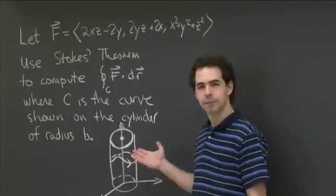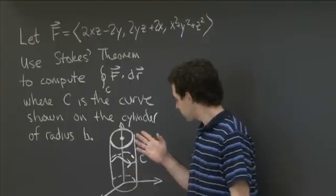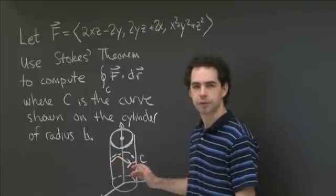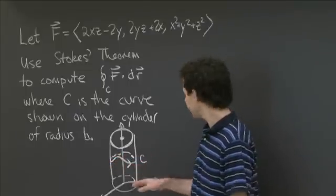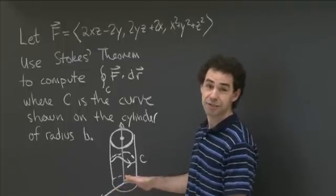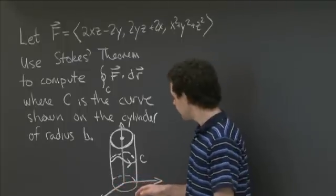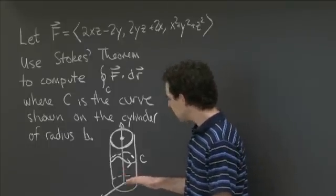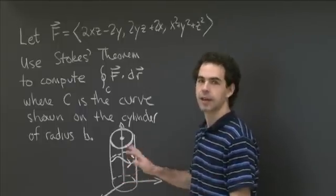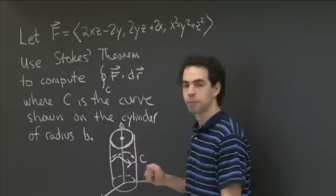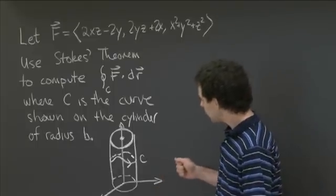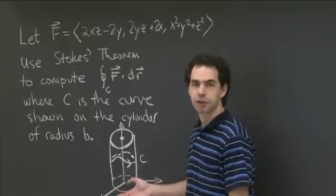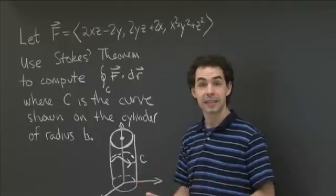Hopefully you had some luck working on this problem. Rather than trying to parametrize this curve directly and compute the line integral directly — since it's a complicated-looking curve and I haven't given you enough information to do that — we should think about applying Stokes' Theorem. We'd like a nice surface with this curve as part of its boundary. This curve lies all on the cylinder of radius b, so a natural choice is to use some piece of this cylinder.